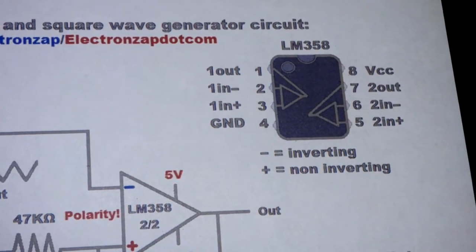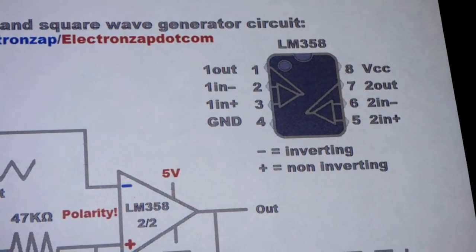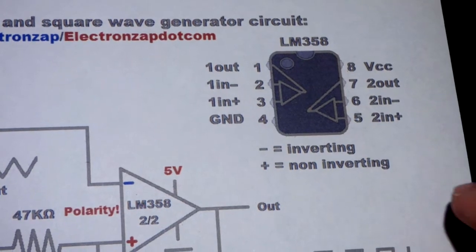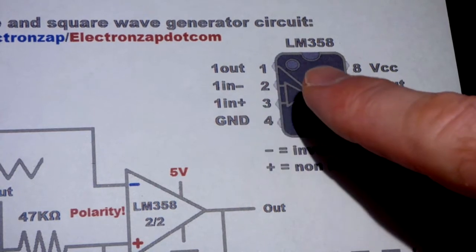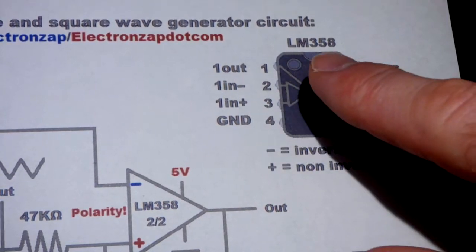Just because they're eight pins does not necessarily mean this is the layout of them. Even if they're dual op-amps, starting from the top left, pin number one, there's either that divot or that divot.